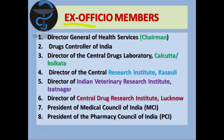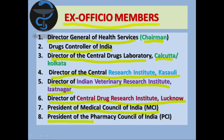There are eight members in the ex officio group. The first is the Director General of Health Services, who is also the chairman of DTAB. The second member is from the Drug Controller of India. The third is the Director of Central Drug Laboratory, which is in Kolkata. The fourth is the Director of the Central Research Institute, which is in Kasauli. The fifth is from the Director of Indian Veterinary Research Institute, which is in Izatnagar. The sixth is from the Director of Central Drug Research Institute, which is in Lucknow. The seventh is the President of Medical Council of India, popularly known as MCI. The eighth and last ex officio member is the President of Pharmacy Council of India, that is PCI.